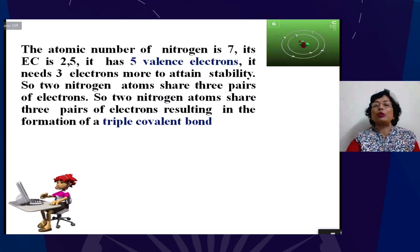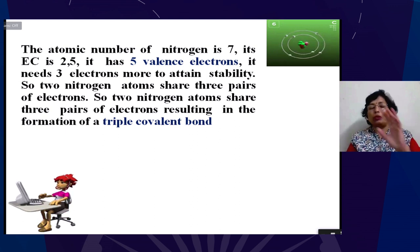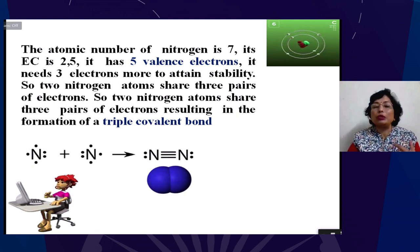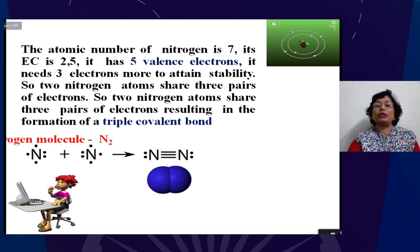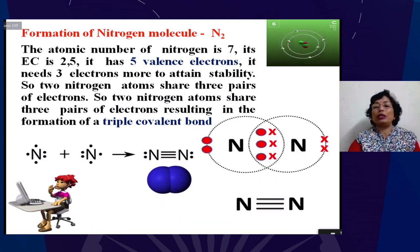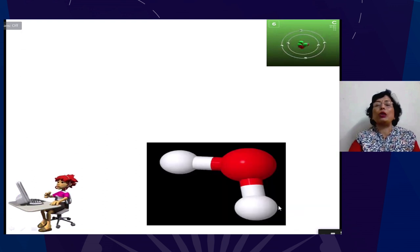I'll wind up taking triple covalent bond. The name itself suggests electrons being shared are three. Nitrogen has electronic configuration 2,5. It requires three electrons. One nitrogen shares three electrons with the other. Hence, we have the formation of nitrogen triple bond nitrogen and it has a lone pair of electrons as well. You see the Venn diagram - these are the six electrons being shared by both nitrogen atoms. Hence we have the formula N triple bond N.